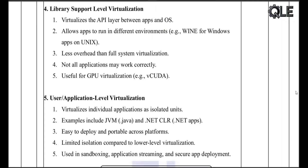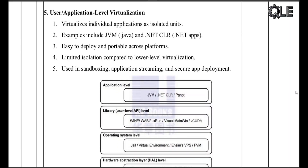Library support level is also used in GPU virtualization, like with vCUDA. And finally, the most familiar for many developers: user application level virtualization. Here we virtualize just the application, not the whole system. Examples include the Java Virtual Machine and .NET CLR. They let apps run anywhere regardless of the underlying system — easy to deploy, portable, and great for sandboxing, though isolation isn't as strong as system-level virtualization.